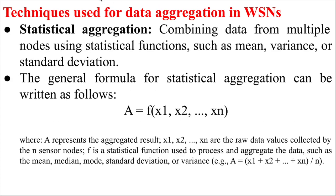These are the three techniques. The first — statistical — uses a mathematical function for aggregation when you have no information about location or time. If you have not used any clock, you cannot note down the time. Similarly, if there is no geo-fencing or location feature, you cannot determine location. So if you have no other option, statistical data aggregation is the only choice — taking the mean or similar techniques without any location or time information.